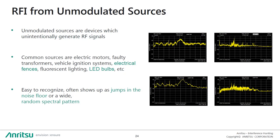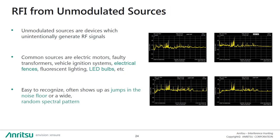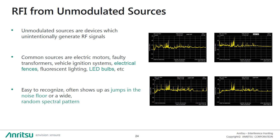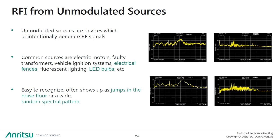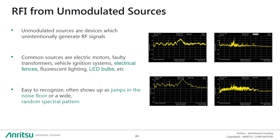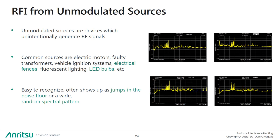We also very often see unintentional interference. Common sources are electric motors, faulty transformers, LED lights, or welding equipment. This kind of problem is usually easy to recognize, as it often shows up as jumps in the noise floor or a wide random spectral pattern, as you can see in the short videos on this slide.